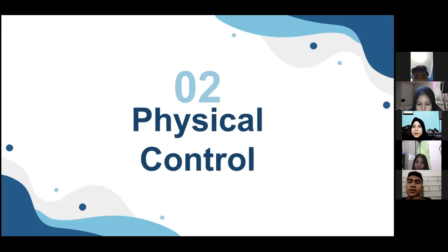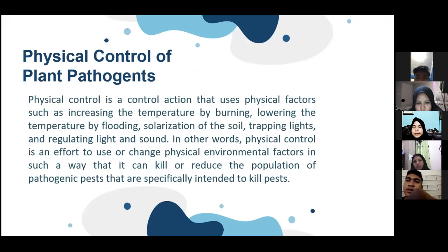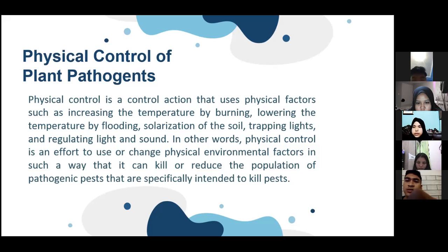Number two is physical control. Physical control of plant pathogens is a control action that uses physical factors such as increasing the temperature by burning, lowering the temperature by flooding, solarization of the soil, dripping light, and regulating light. In other words, physical control is an effort to use or change physical and environmental factors in such a way that it can kill or reduce the population of pathogenic pests.